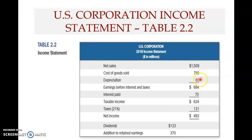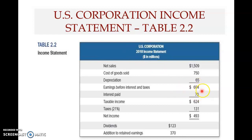After subtracting these costs, you get Earnings Before Interest and Tax — sometimes called EBIT. Tax is also an operating cost in this context, but this is the basic structure of the income statement.